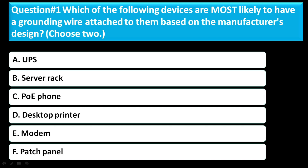Question number 1: Which of the following devices are most likely to have a grounding wire attached to them based on the manufacturer's design? Choose 2. Option A is UPS, Option B is a server rack, Option C is a PoE phone, Option D is a desktop printer, Option E is a modem, Option F is a patch panel. The correct answer is A and B — UPS and server rack.